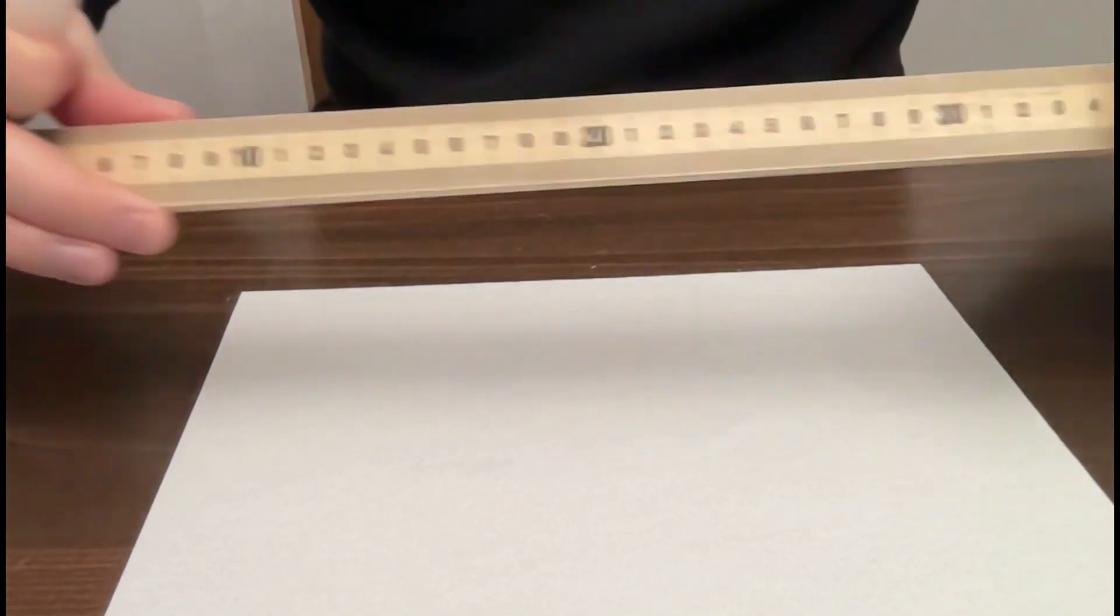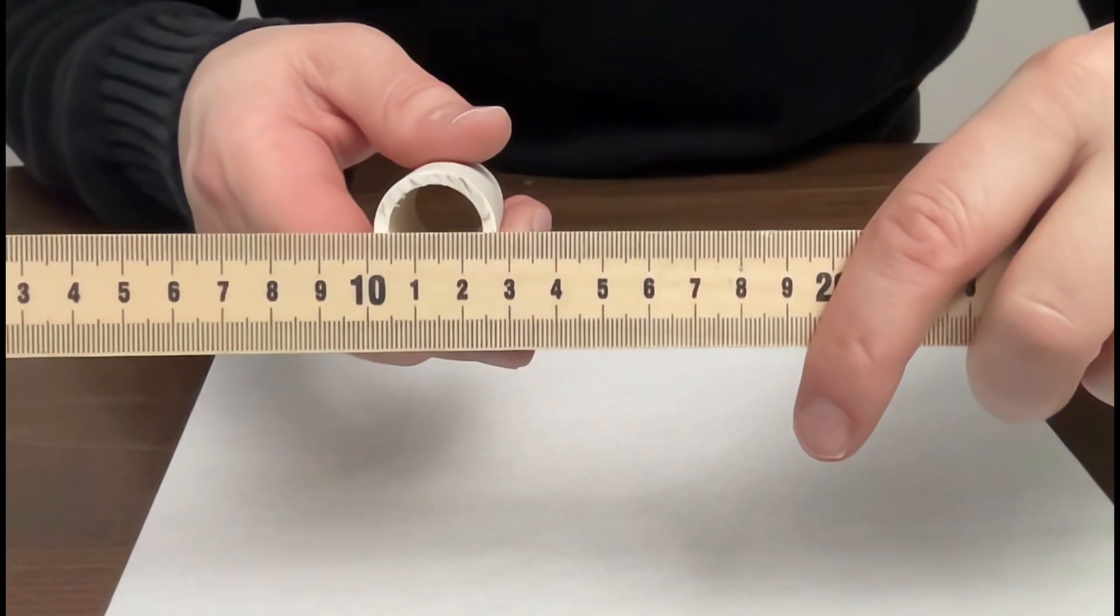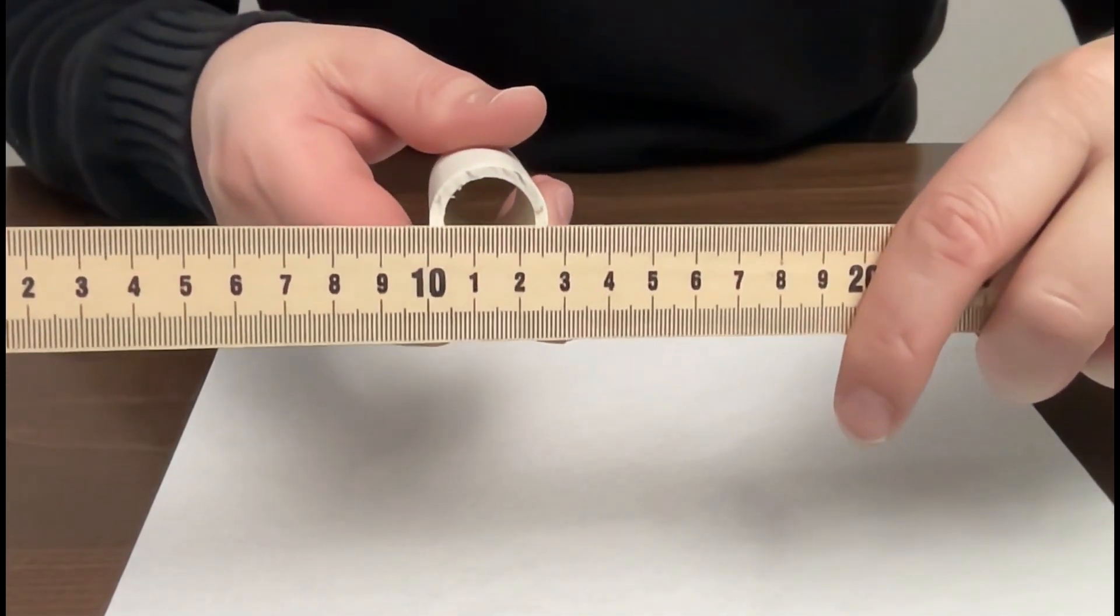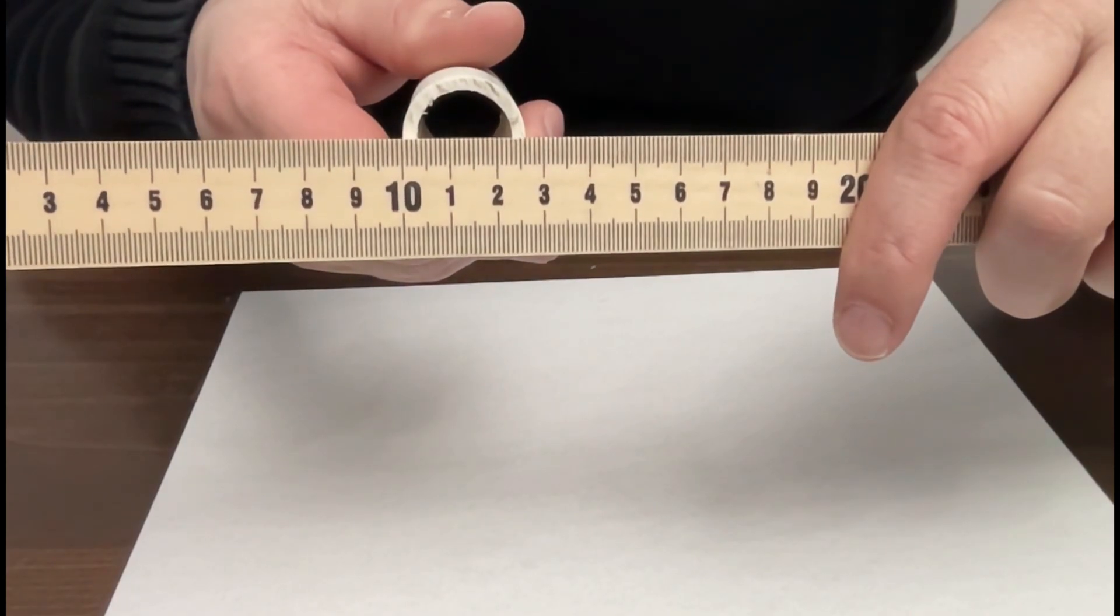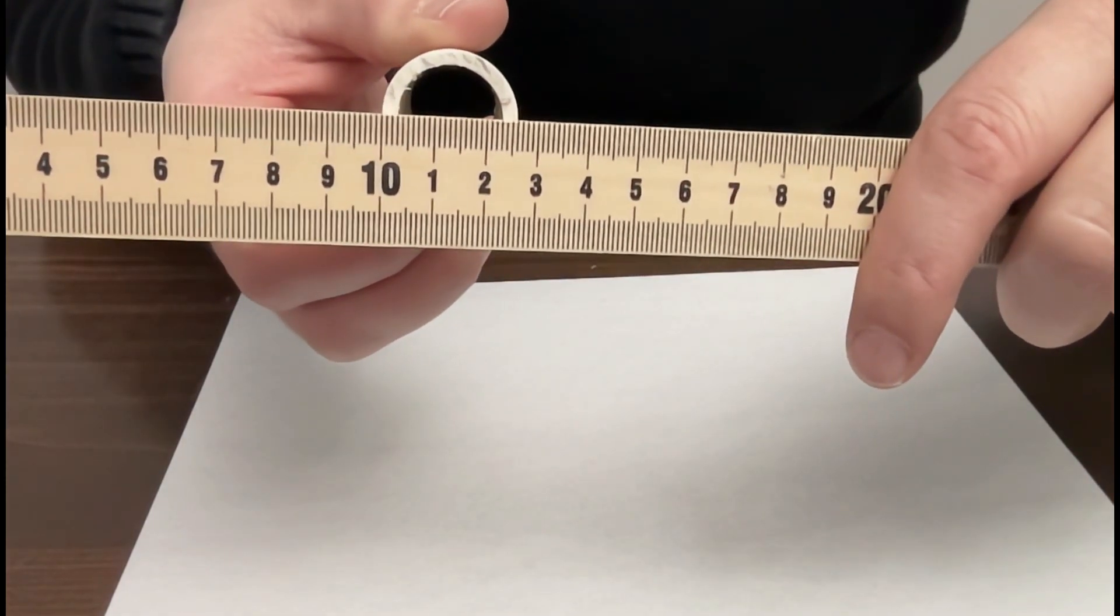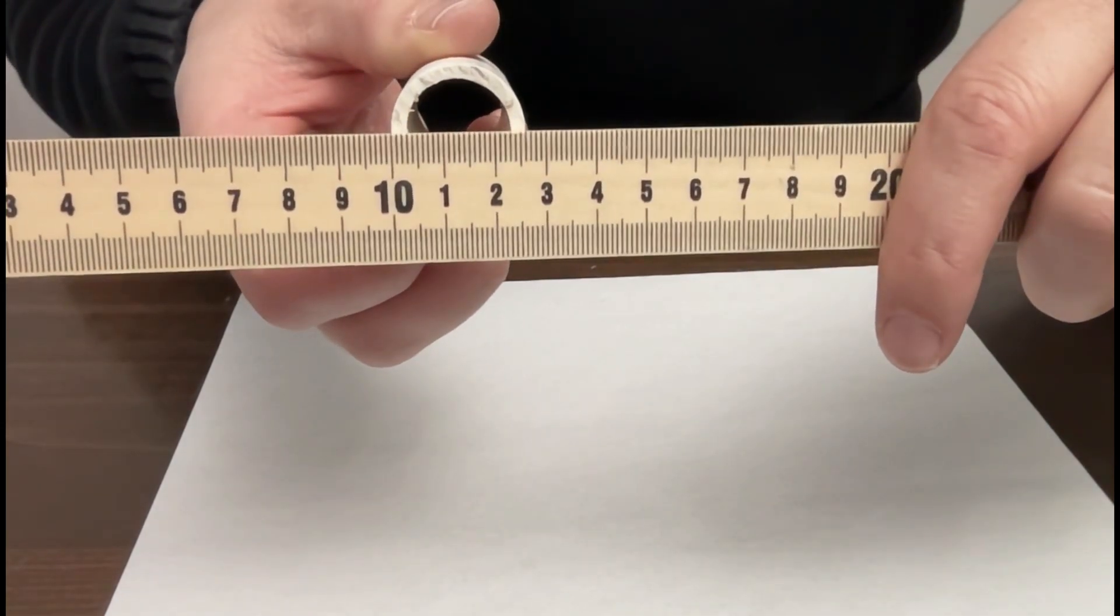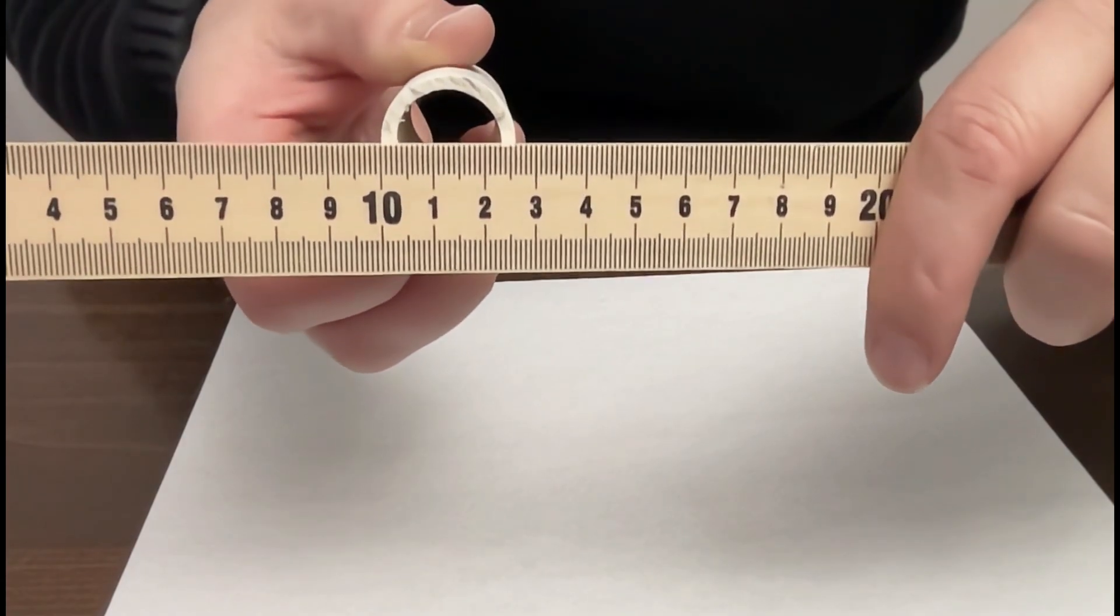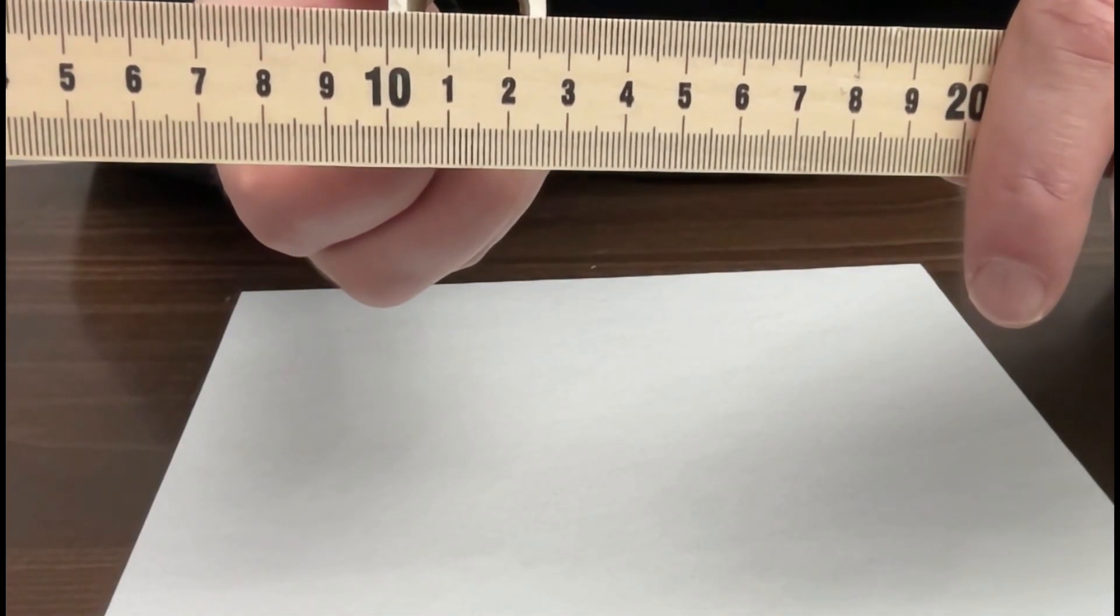You'll need a ruler or other measurement device. You'll want to line up one side of the cylinder so that it's touching a hatch mark of the ruler. Then try to get your estimate of the diameter which is the largest distance across the cylinder here.